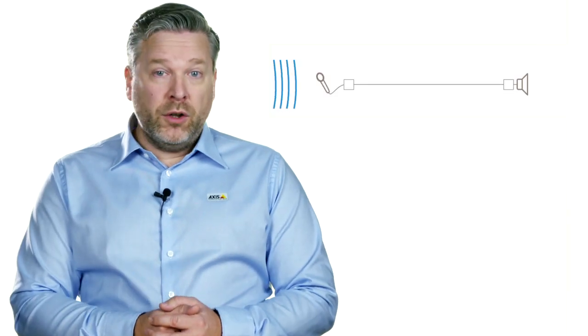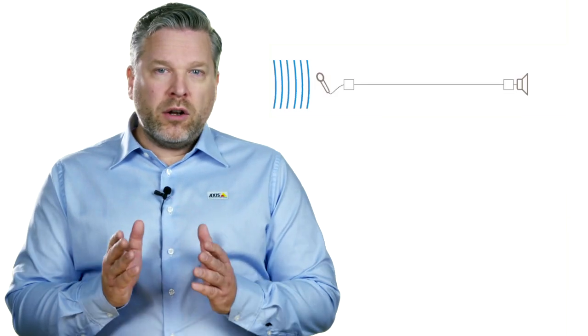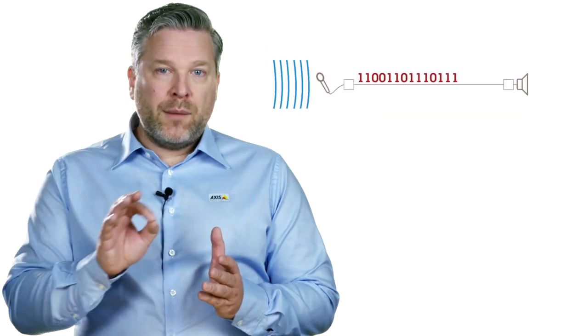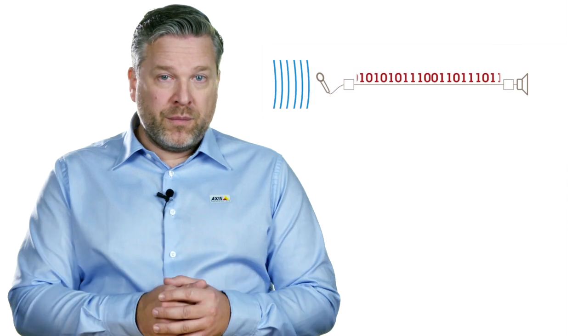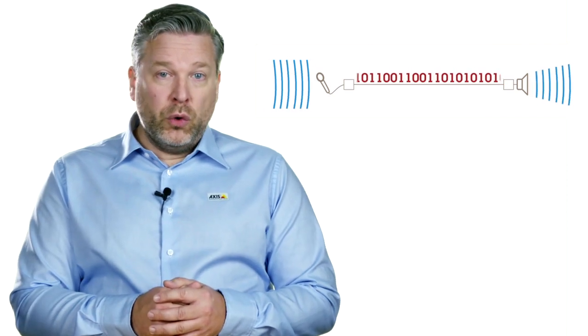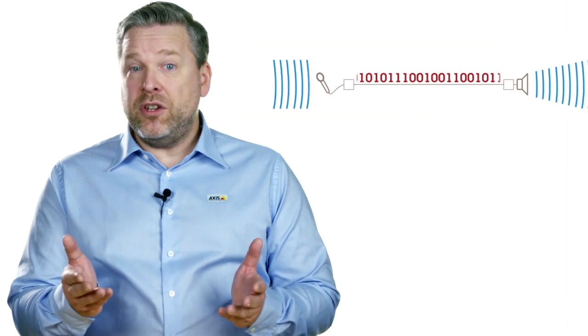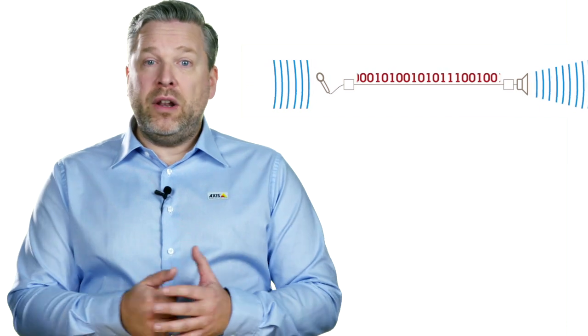And this is where digital audio differs. Instead of using varying voltage, numerical values are used to describe the waveform. These values can then be stored and transmitted without changing even the slightest, even in areas of electromagnetic disturbance. They will not be corrupted by noise and when converted back into sound waves, they will sound exactly the same.